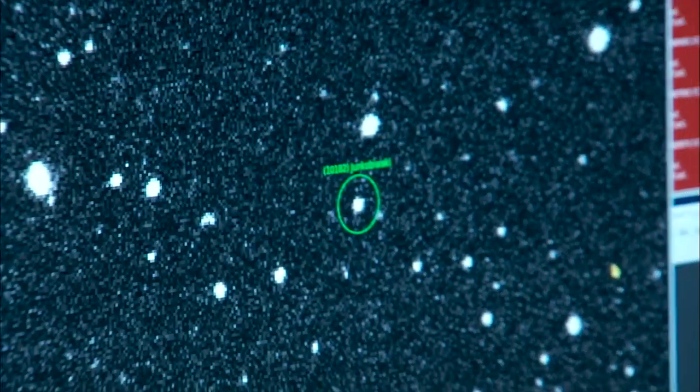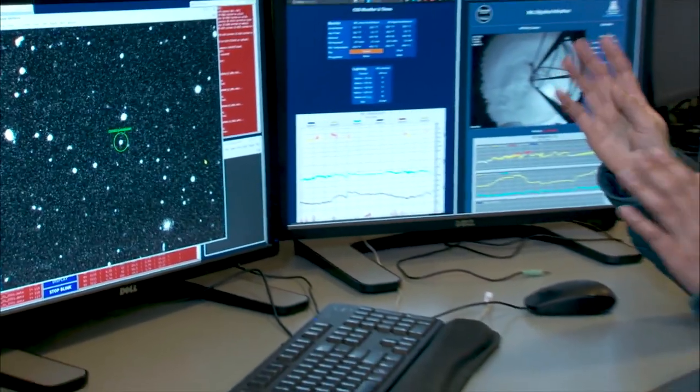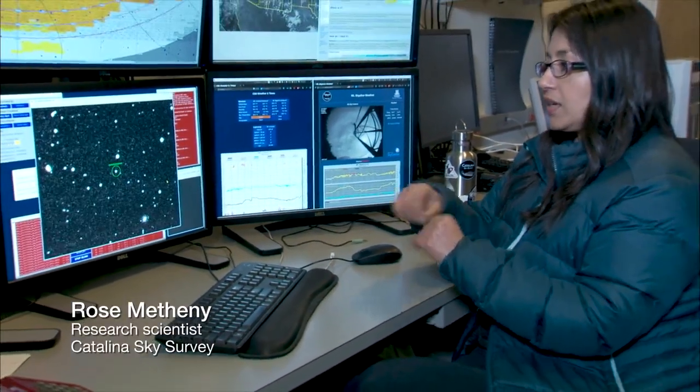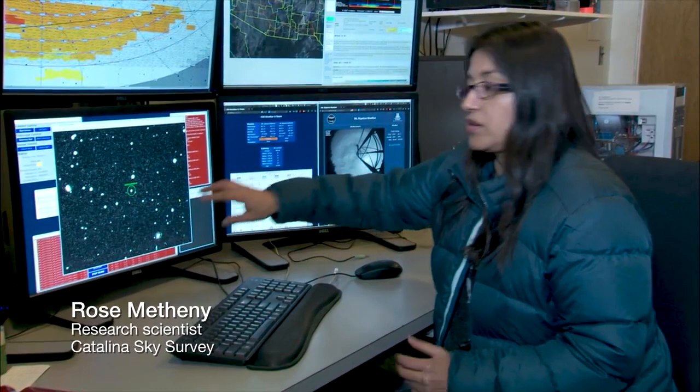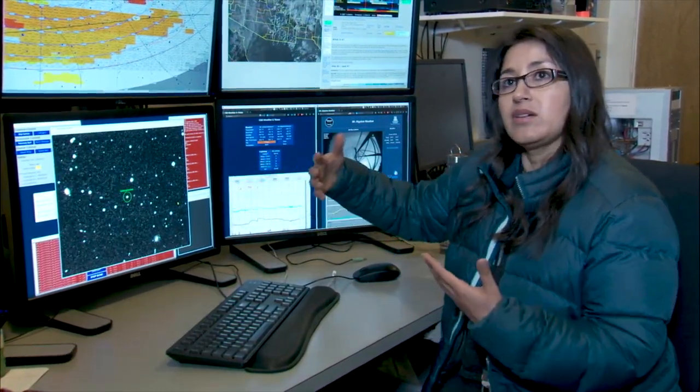In order to find a near-Earth asteroid, we take four images of a patch of sky separated by about five minutes. We take those four images and we blink them really fast and it creates this little animation so we can see that the stars in the background are static as they should be. And if there's anything that's moving, it'll pop out.